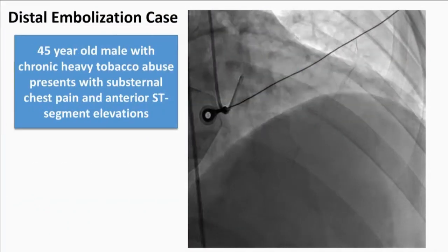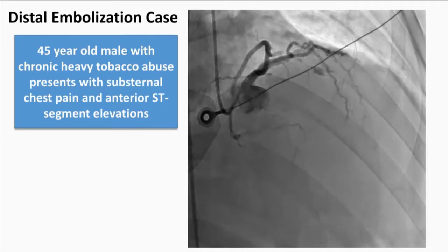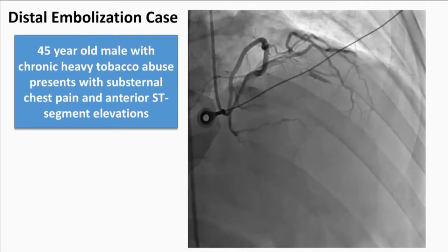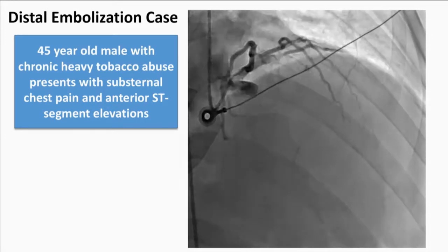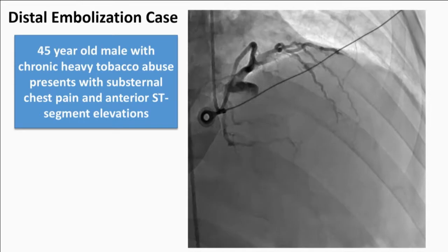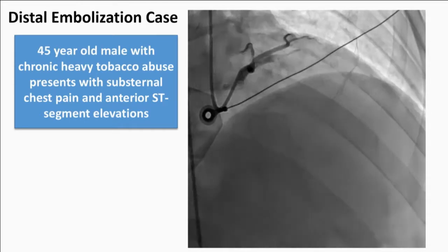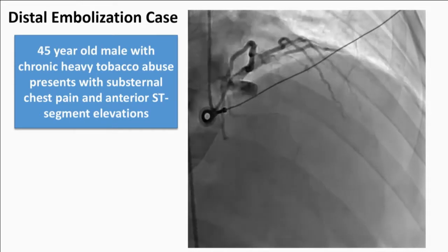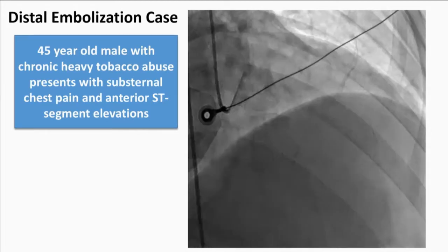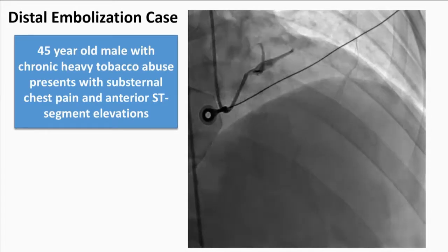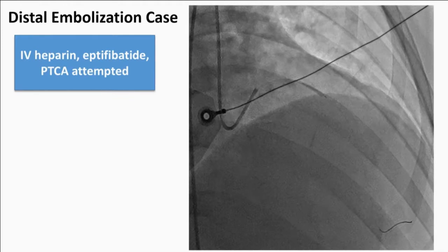I'll start with a case. This is a 45-year-old male with heavy tobacco abuse, presented with an acute myocardial infarction involving his anterior wall. I think all of us can appreciate the thrombus burden in the proximal LAD — a tubular area of thrombotic occlusion, TIMI zero flow.